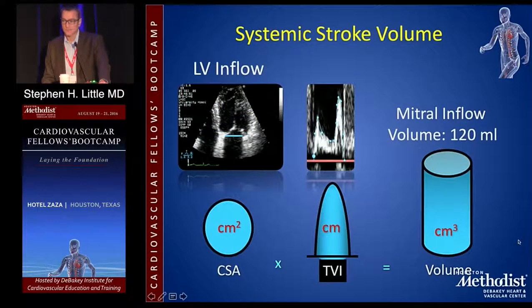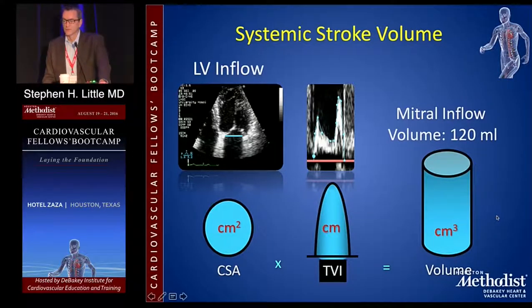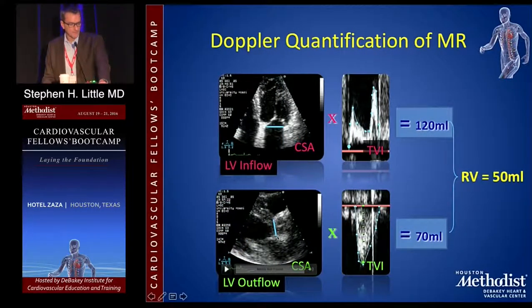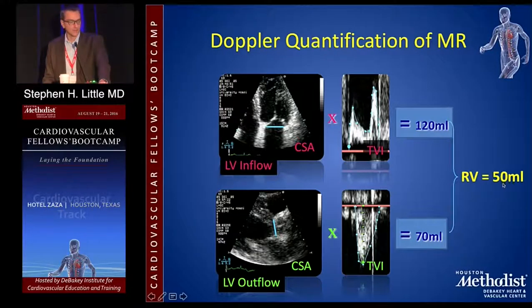Applied to mitral inflow: measure the mitral annulus diameter, assume a circle to get area, measure the distance blood travels at that point — area times distance equals volume. If mitral inflow into the LV is 120 mL and you assume continuity (whatever enters must leave), you then measure what leaves the ventricle via the LVOT. If 120 enters and only 70 leaves, that 50 mL difference is the mitral regurgitant volume — the only other place it could go, unless there's a VSD.